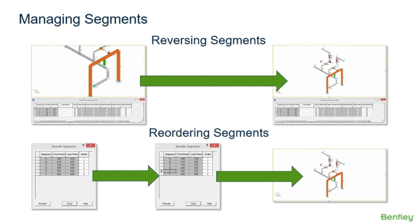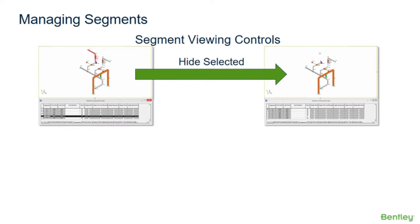The reorder segment command will bring up a dialog box that allows reordering segments by typing numbers in the order column and clicking the reorder button, which will rename the segments. This is also very useful when importing CAD models, where the segment numbering is not well organized when imported into AutoPipe. It can be desirable to reorder segments so that adjacent segments have a similar sequential order and it's easier to understand the flow of the model.